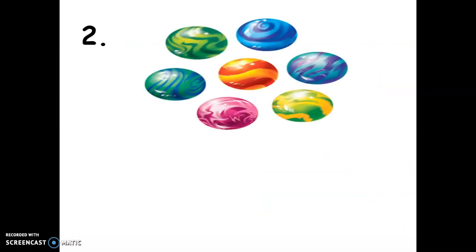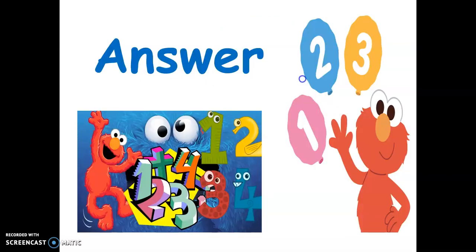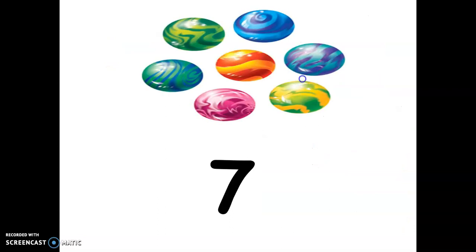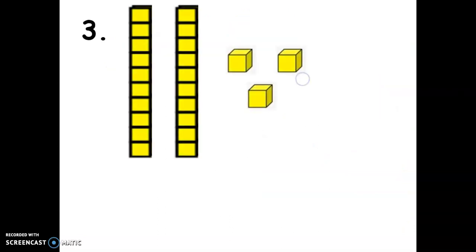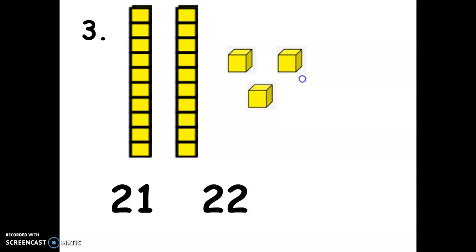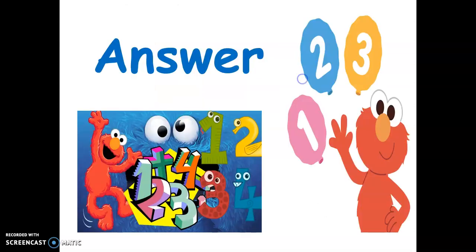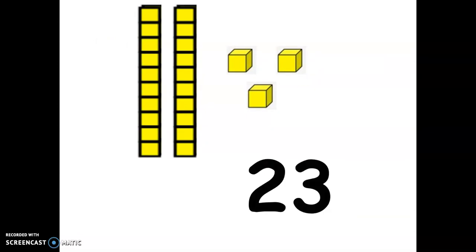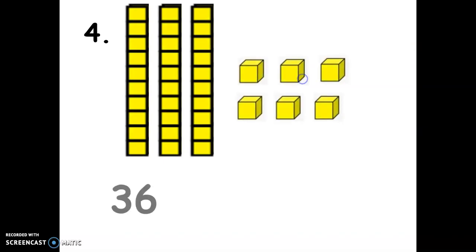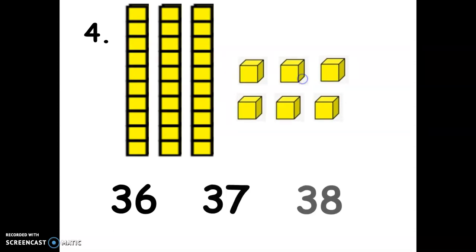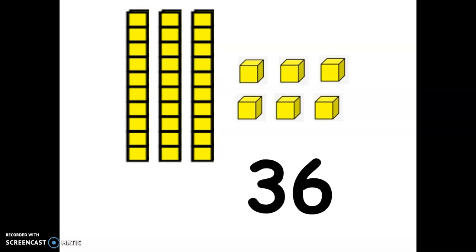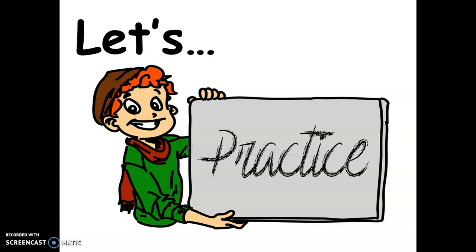For number two, we have marbles — how many are there: seven, eight, or nine? The answer is seven marbles. Next, we have two longs and three units — how many: twenty-one, twenty-two, or twenty-three? The answer is twenty-three. And the last one: three longs plus six units — is it thirty-six, thirty-seven, or thirty-eight? The answer is thirty-six. Let's practice more in our Genyo!